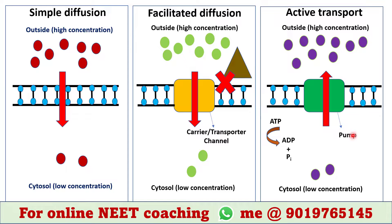This protein is called a pump, because it requires energy from ATP to transport molecules against the concentration gradient. Anything that requires energy to perform a task might be called a pump. This pump breaks down an ATP molecule, yielding ADP and inorganic phosphate. The energy released after the breakdown of ATP is used to transport the molecules.